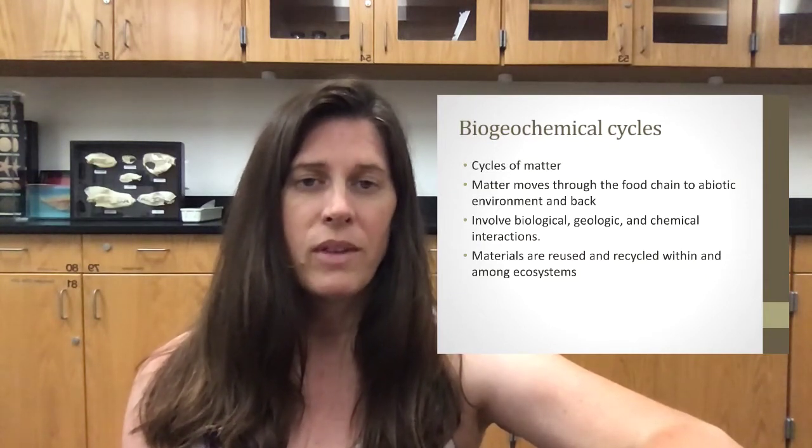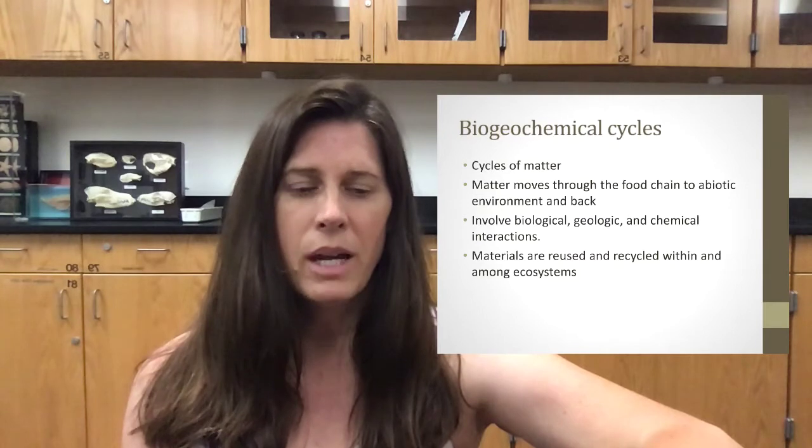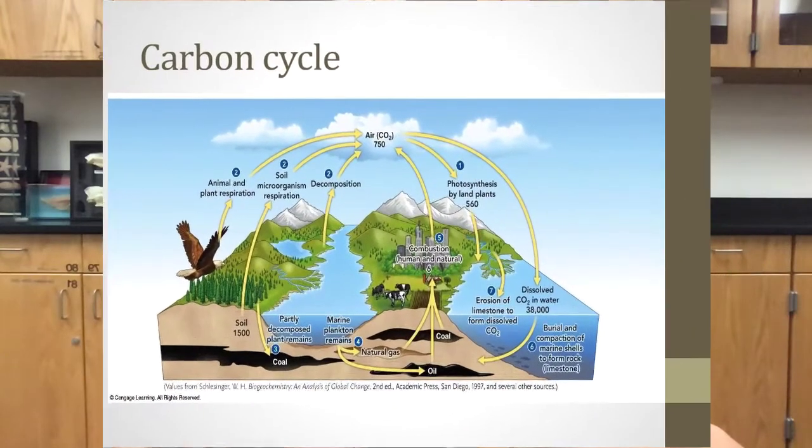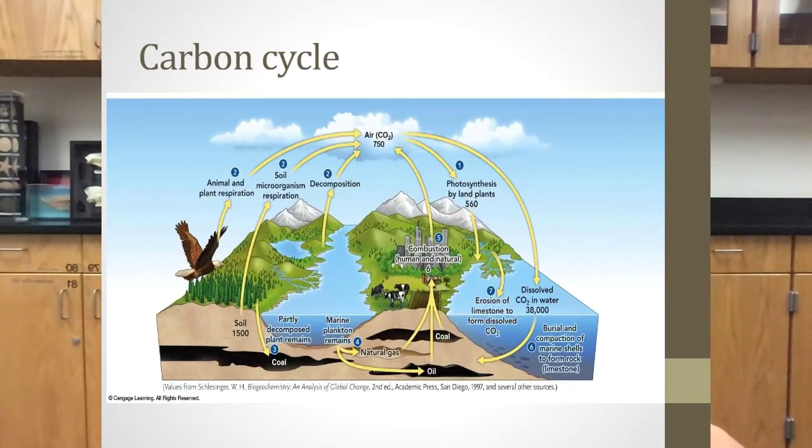So we're going to give a few examples of what type of matter gets recycled and how. The first one we can talk about is the carbon cycle. Carbon is an energy molecule, a very important molecule. You may have heard throughout your lifetime that we are carbon-based life forms, and that's because we are. It's one of the most abundant molecules in our body.